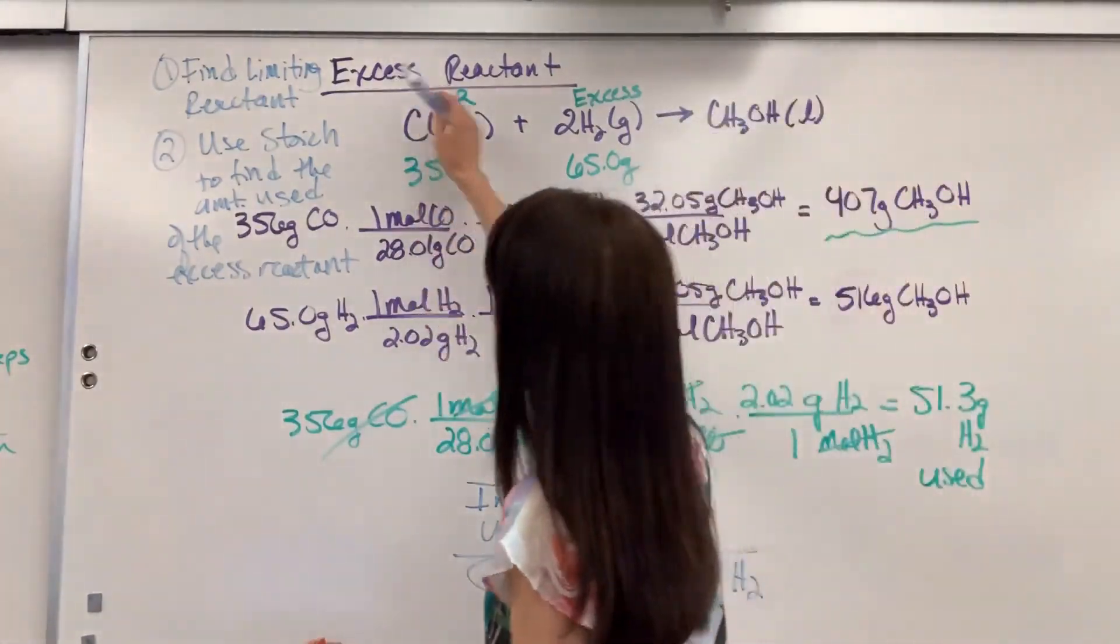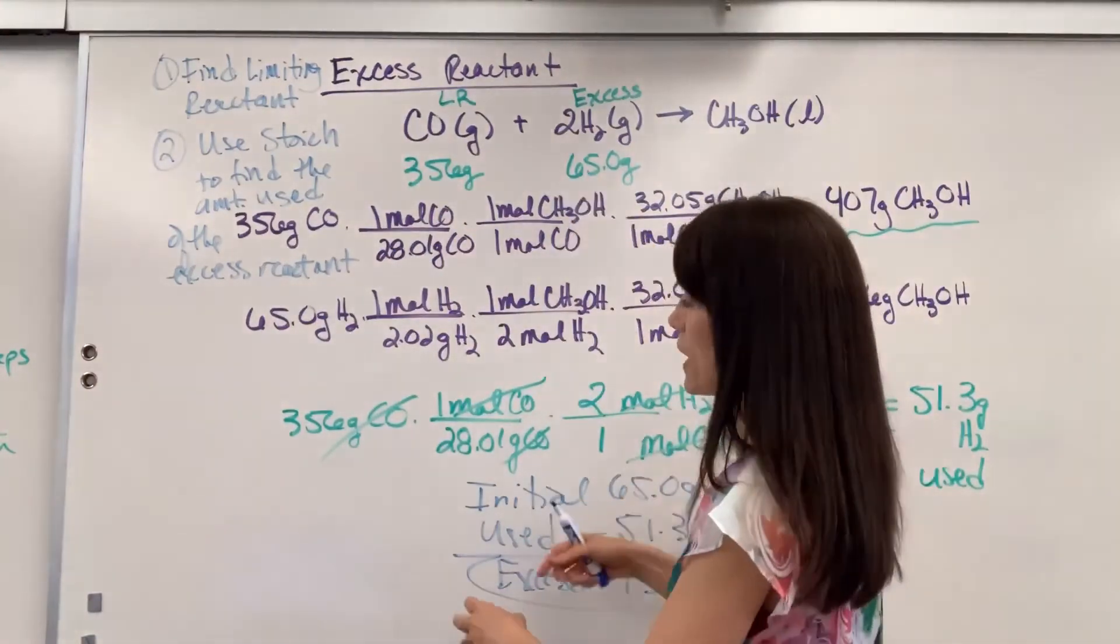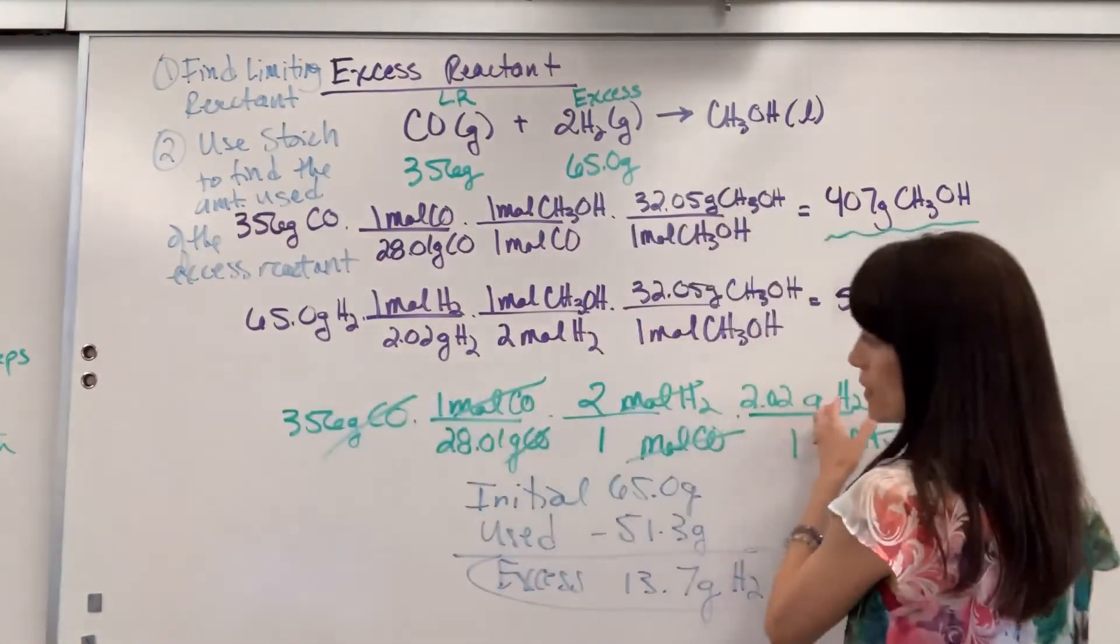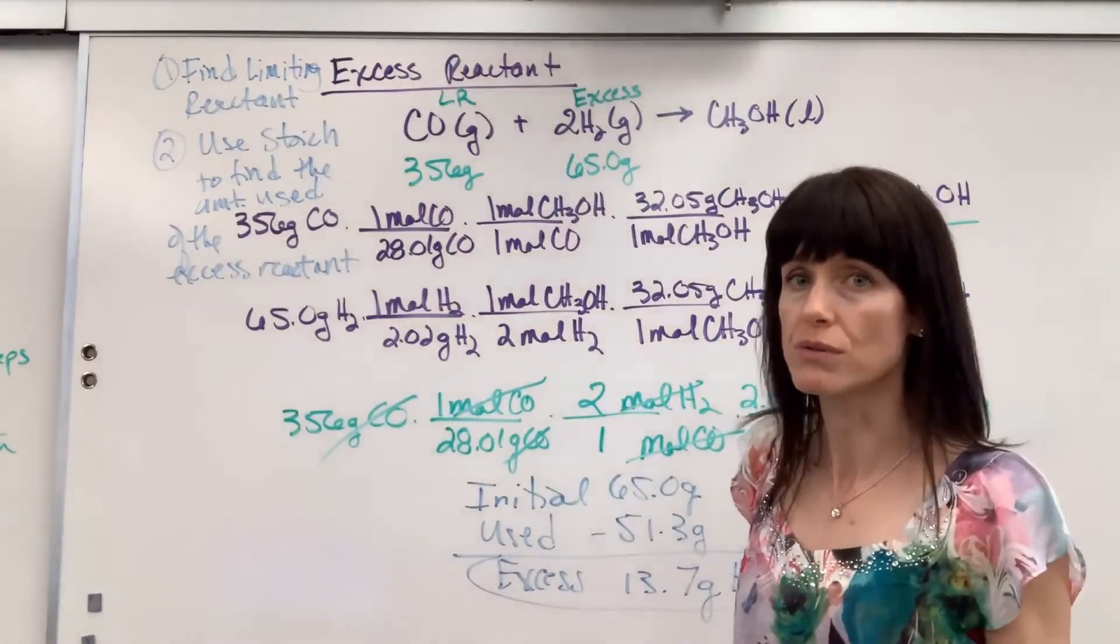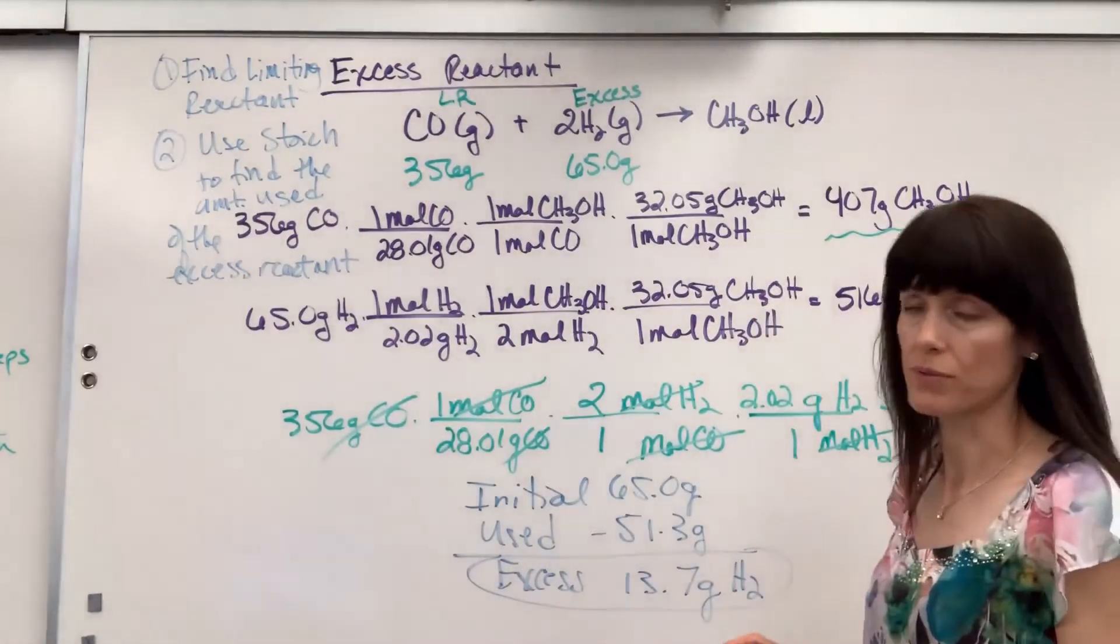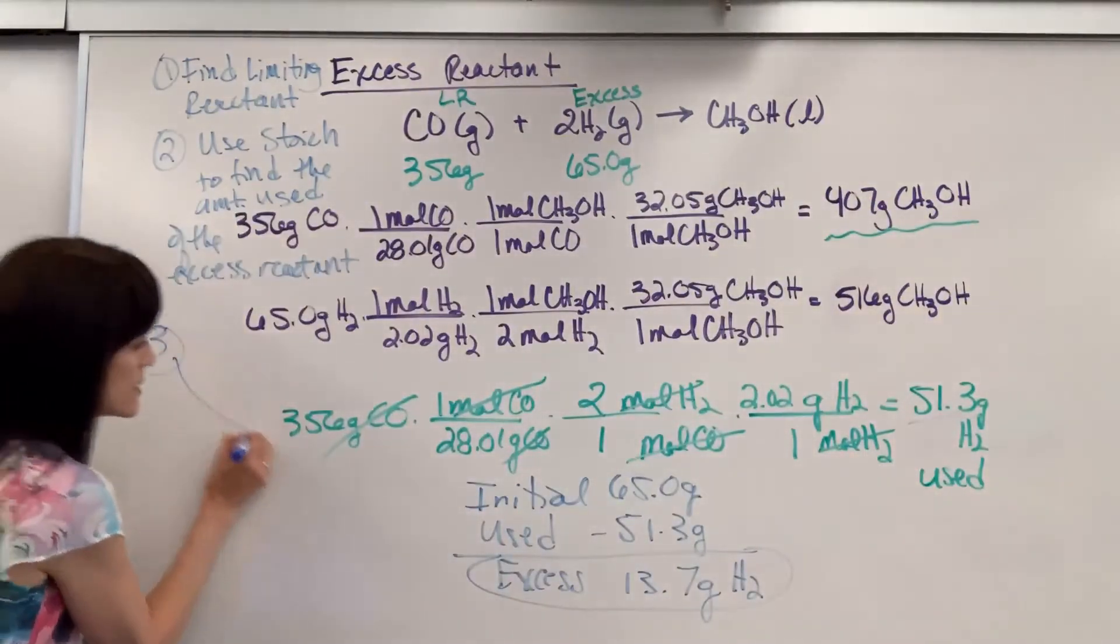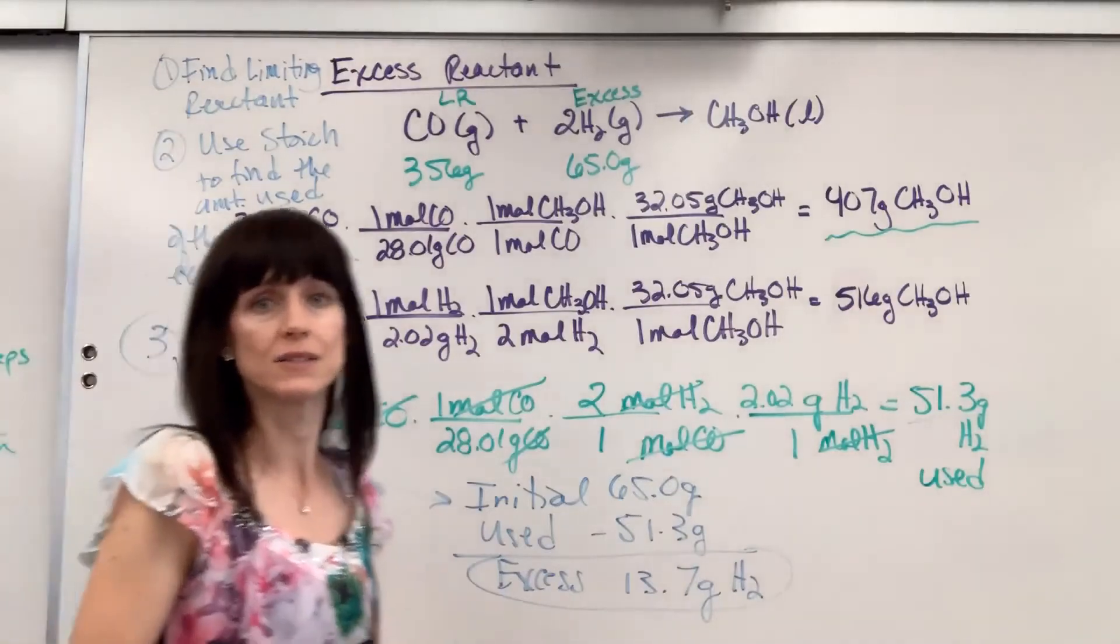Once you've done that, did all of this purple, found the limiting reactant, identify the excess reactant, then you do this stoichiometry to see how much do you use of that excess reactant? We found the 51.3. The last step, number three, is simply that subtraction.